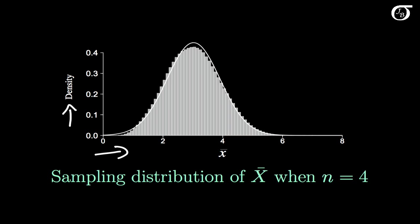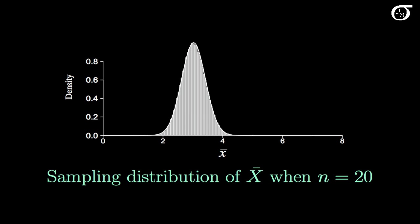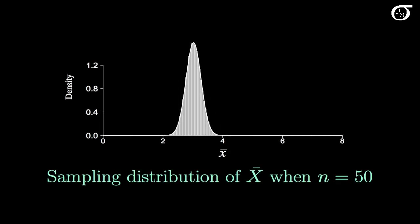The grey histogram is approximately the sampling distribution of X bar when n equals 2, and the superimposed normal curve shows it's not quite normal. When n is 4, the sampling distribution of X bar is actually quite close to normal already. When n is 10, it looks quite normal; when n is 20, it's even closer; and when n is 50, it's looking very normal. The sampling distribution of X bar gets closer and closer to a normal distribution as the sample size increases.